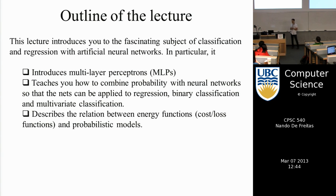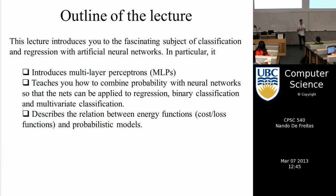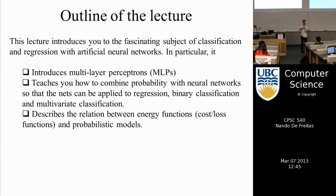For continuous data we use Gaussian models; for discrete binary data, Bernoulli models; and for multiple categories, multinomial distributions to model the likelihood. For each type of data there's a corresponding distribution. We take the negative log likelihood to get the cost function, then compute the derivative and perform gradient descent.